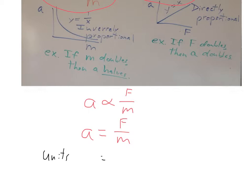So underneath here, let's put the units. For force on top we have Newtons. For mass on the bottom we have kilograms. And for acceleration over here we get meters per second squared.